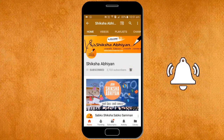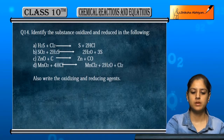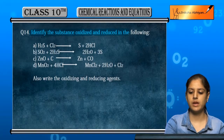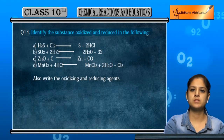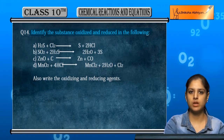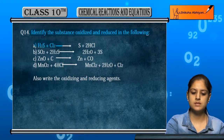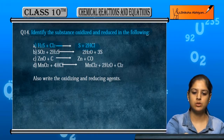Question number 14: identify the substance oxidized and reduced in the following reactions. First, we have H₂S plus Cl₂ giving S and HCl.